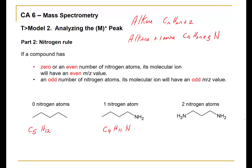For two nitrogens, it doesn't happen that often, so let's just count the total number of carbons, hydrogens, and nitrogens. There are three carbons, two hydrogens on each carbon and two hydrogens on each nitrogen, giving a total of 10 hydrogens. Therefore, this would be C3H10N2. With this information, we can easily calculate the nominal mass: for C5H12, that's 5 times 12 equals 60, plus 12 times 1, giving 72 atomic mass units.